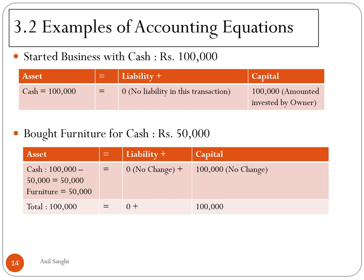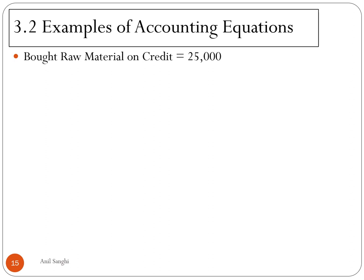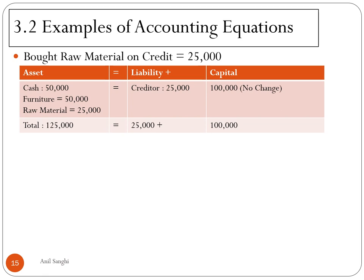Now we are buying raw material on credit for Rs. 25,000. The asset position: cash of Rs. 50,000, furniture of Rs. 50,000, and raw material (also an asset) of Rs. 25,000 — overall assets of Rs. 1,25,000. Since we bought raw material on credit, we now have a liability of Rs. 25,000. There is no change in capital. So: assets of Rs. 1,25,000 = liability of Rs. 25,000 + capital of Rs. 1,00,000. Together they are equal.